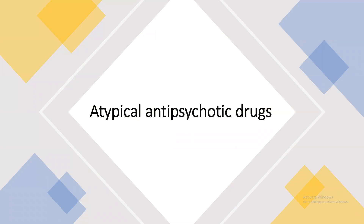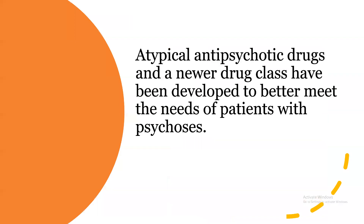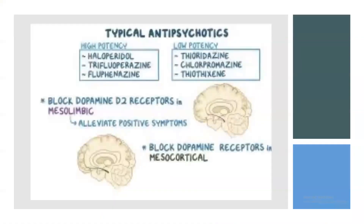Atypical antipsychotic drugs are a newer drug class developed to better meet the needs of patients with psychosis. Typical antipsychotics are of different types — high potency includes haloperidol, trifluoperazine, and fluphenazine; low potency includes thioridazine, chlorpromazine, and thiothixene. They block dopamine D2 receptors in the mesolimbic area and also block dopamine receptors in the mesocortical area of the brain.